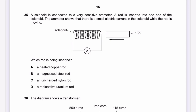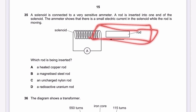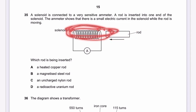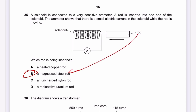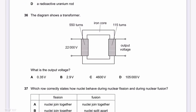Question 35: A solenoid connected to a sensitive ammeter shows a small current while a rod is being inserted. A plain metal rod would not generate a current — only a magnet moving through a solenoid changes the magnetic flux, inducing an EMF and thus a current. The rod must be a magnetized steel bar. The answer for question 35 is B.